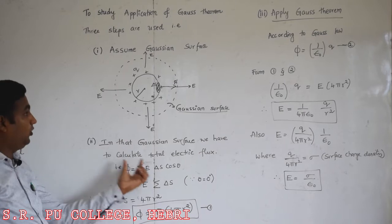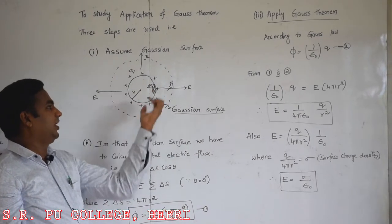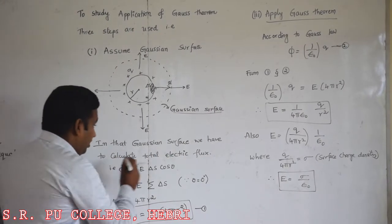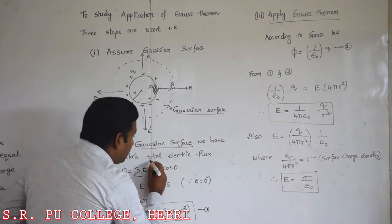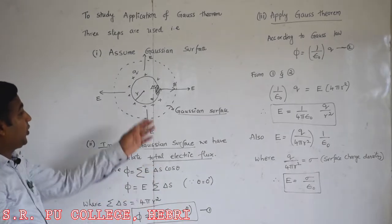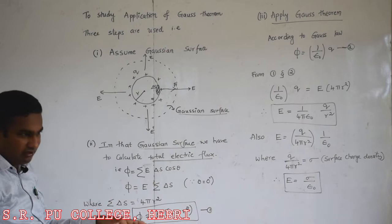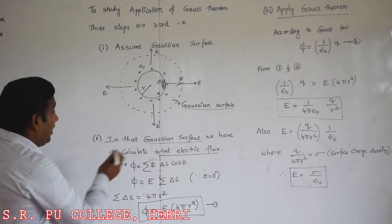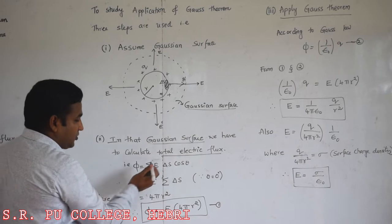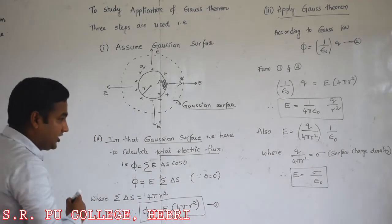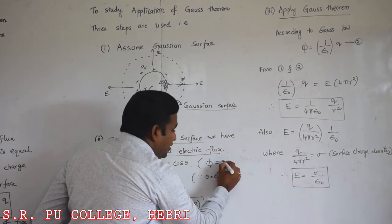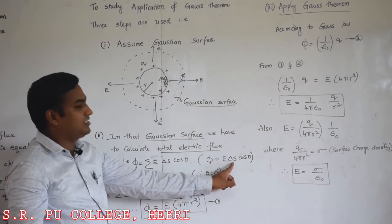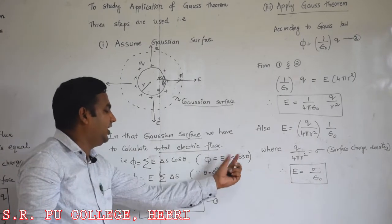The second important step in studying the application of Gauss theorem is to calculate the total electric flux in that Gaussian surface. The Gaussian surface may be spherical, cylindrical, or any shape. We calculate total electric flux as summation of E into delta S into cos theta. Here E is the electric field, delta S is the small surface area, and theta is the angle between E and delta S.